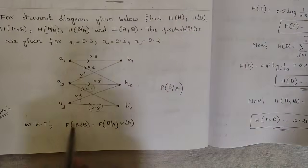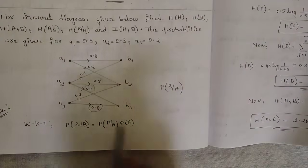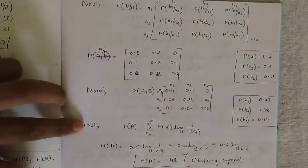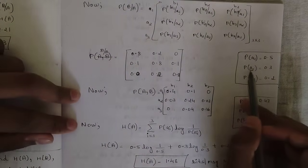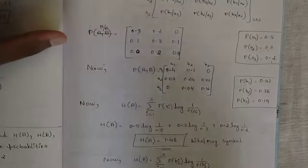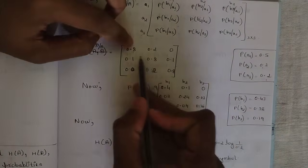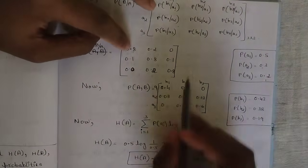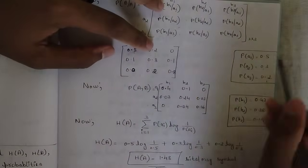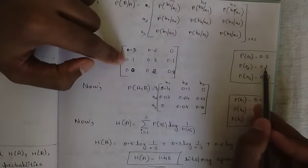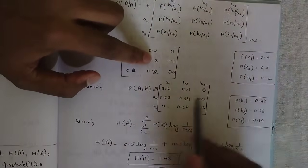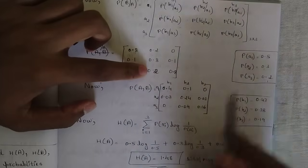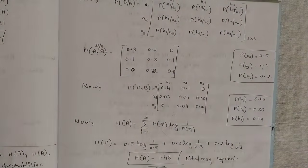To get the joint probability matrix P(A,B), we use the relation P(A,B) = P(B|A) × P(A). We have the channel matrix P(B|A) and the probabilities P(A1)=0.5, P(A2)=0.3, P(A3)=0.2. Multiply each row by the corresponding P(A): 0.8×0.5=0.4, 0.2×0.5=0.1, 0×0.5=0; 0.1×0.3=0.03, 0.8×0.3=0.24, 0.1×0.3=0.03; 0×0.2=0, 0.2×0.2=0.04, 0.8×0.2=0.16.